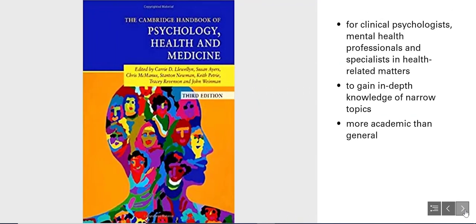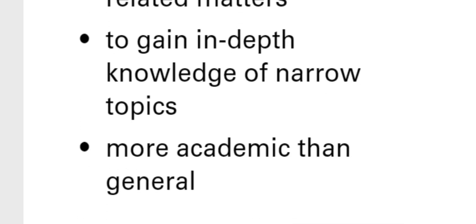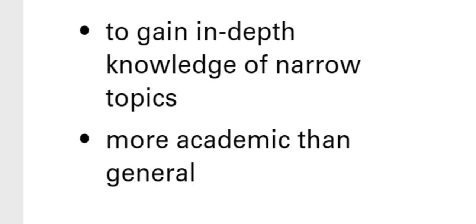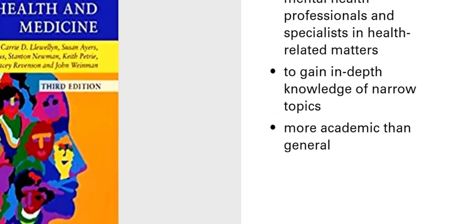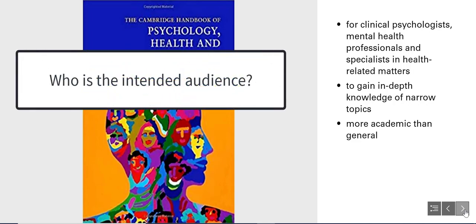and Medicine is described as a resource for clinical psychologists, mental health professionals, and specialists in health-related matters. This encyclopedia-like source is used by people in those fields to gain more in-depth knowledge of topics that are new to them. This type of specialized source is likely to be considered more academic than general, so asking yourself who is the intended audience for this source is a key factor in distinguishing general from academic sources.